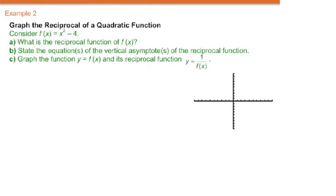Another function we're going to find the reciprocal of, this time we have f(x) equals x squared minus 4, so the reciprocal of that would be 1 over x squared minus 4.